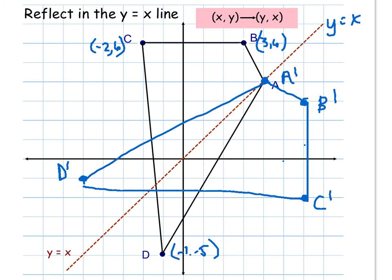There will be a couple of examples on your practice where you reflect over other lines like y = 2 or x = -1. Those are no different than reflecting over the x and y axes — the only thing that changes is where your line of reflection is. You'll see examples of that in your practice.